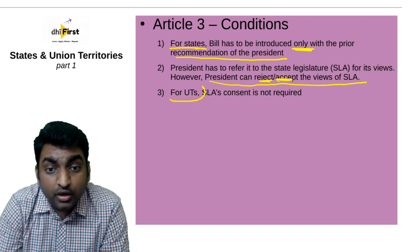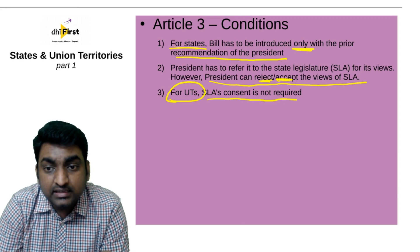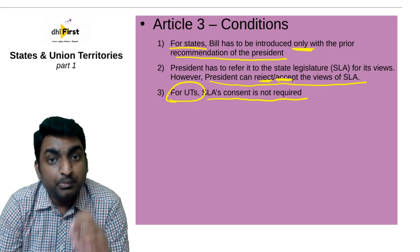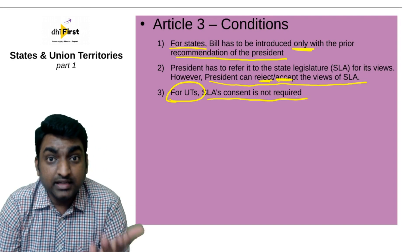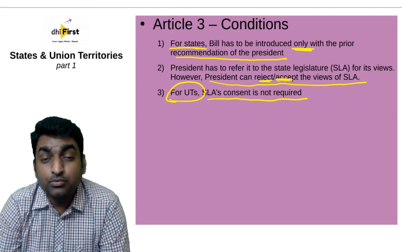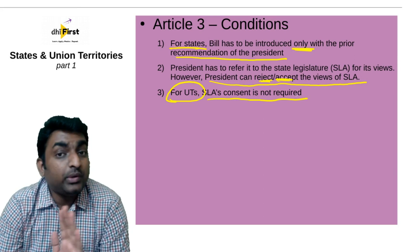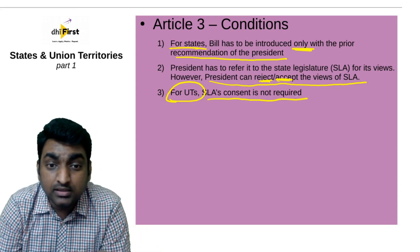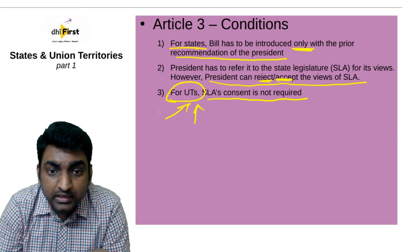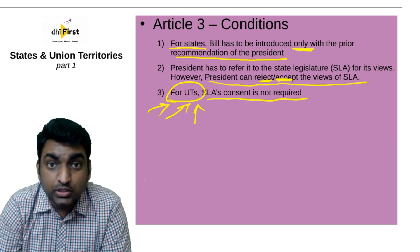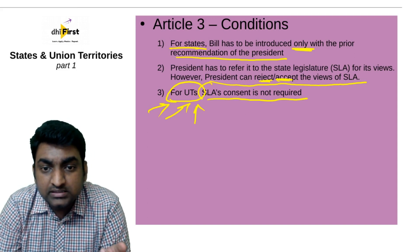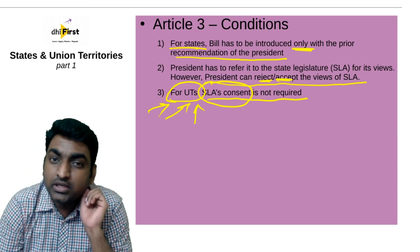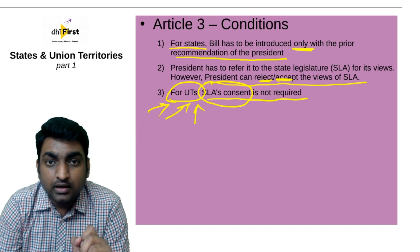For union territories, the state legislative assembly's consent is not required. This is the point on which the present government actually passed the J&K bill. When the opposition said the government should have consulted the Jammu and Kashmir state legislature, the government said they didn't need consent from the state legislature because they were making it a union territory — so no consent from the state legislative assembly was required. These are some of the conditions article 3 puts on parliament.